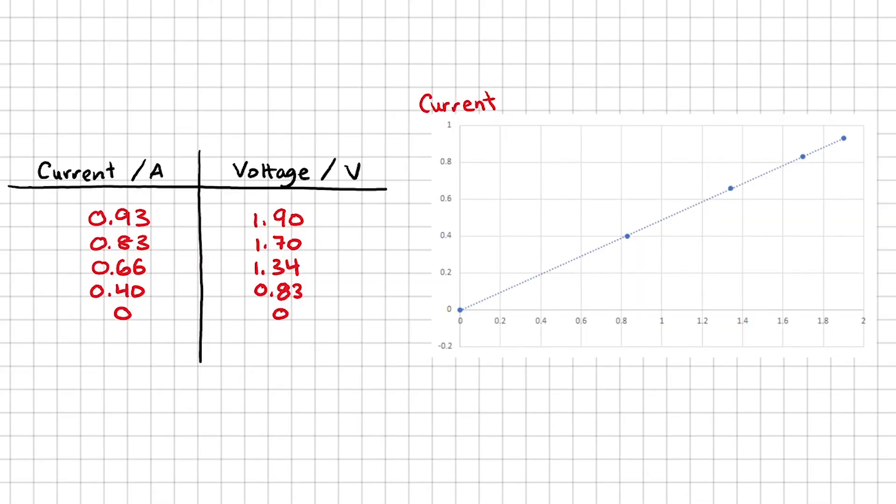Plotting the result on a current versus voltage graph and adding a line of best fit, we get a straight line through the origin. So this confirms that a resistor obeys Ohm's law, because voltage is proportional to current for a fixed resistance.